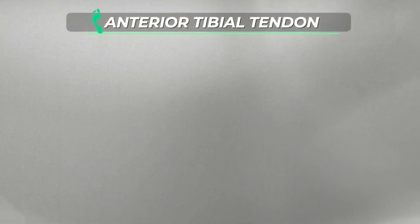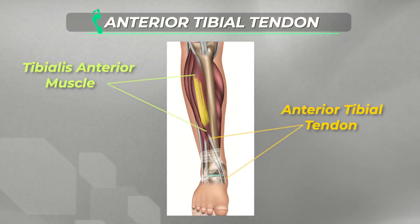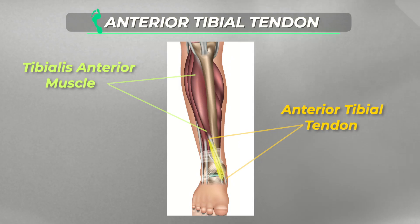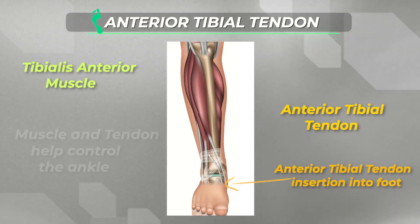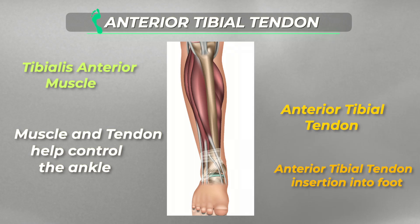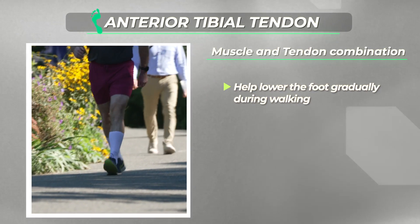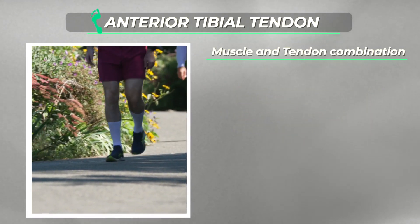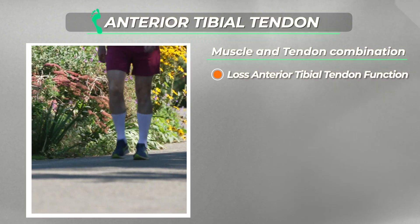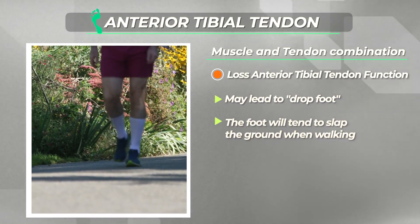The anterior tibial tendon originates from the tibialis anterior muscle at the front of the lower leg. The tendon then runs across the front of the ankle joint and inserts into the inside of the midfoot. The muscle and tendon help to control the motion of the ankle. Specifically, they help to lower the foot gradually during walking, similar to the way a drawbridge works. Therefore, loss of the function of the anterior tibial tendon may lead to a partial drop foot, where the foot will tend to slap on the ground during walking.